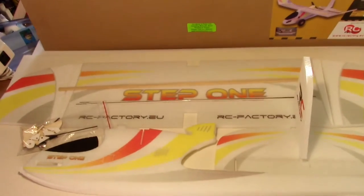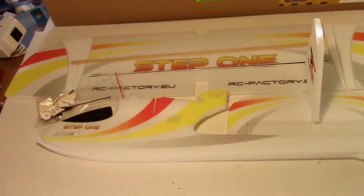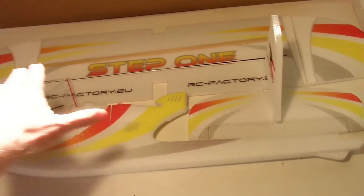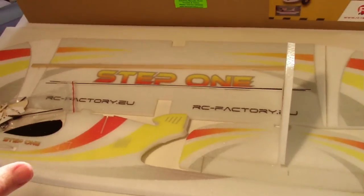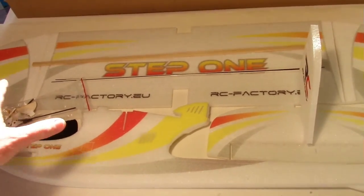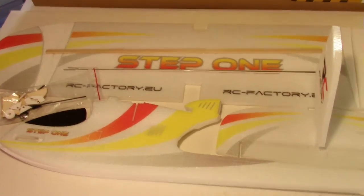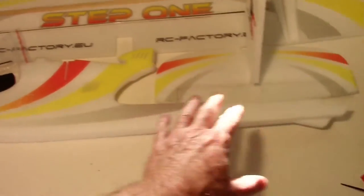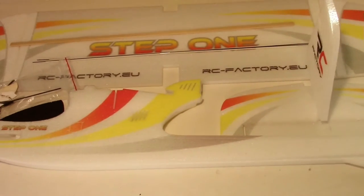As you can see, this plane is a pusher prop, similar to a Skywalker. It has a pretty good size wingspan at 850 millimeters. It has some similar features to a Skywalker, although it doesn't have the T-tail, it has a regular tail like this.